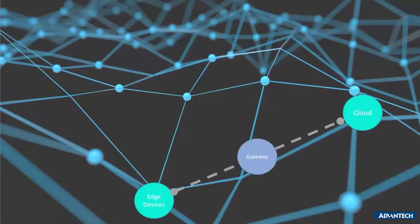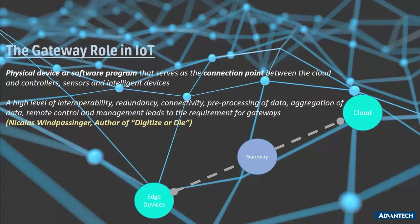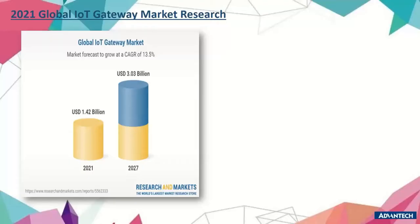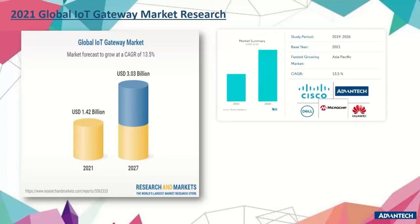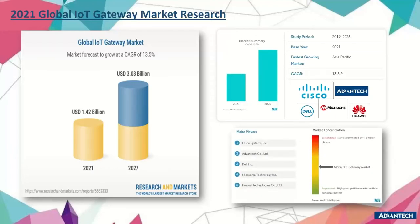When we talk about IoT applications, the gateway always plays an important role among devices and the cloud, helping with data collection and transfer. Gateway requirements consist of a high level of interoperability, redundancy, connectivity, data processing, data aggregation, remote control, and management. According to global IoT market research by Research and Markets, gateway spending reached around USD 1.42 billion in 2021, and is forecasted to grow to around USD 3.3 billion by 2027.